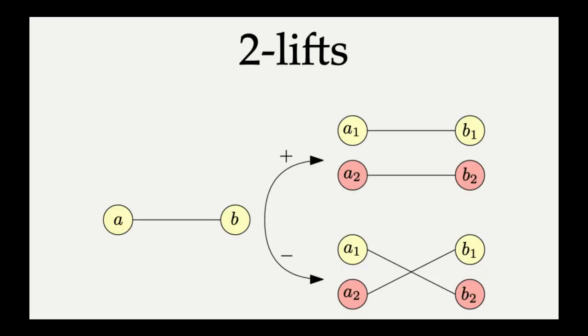So let's get started with the definition of a 2-lift. In the 2-lift of a graph, you take every vertex and you replace that vertex with 2 copies. So as you can see in this picture, the 2 vertices a and b were each replaced with 2 copies: a₁ and a₂, and b₁ and b₂. And wherever there is an edge in the original graph, we place a matching.